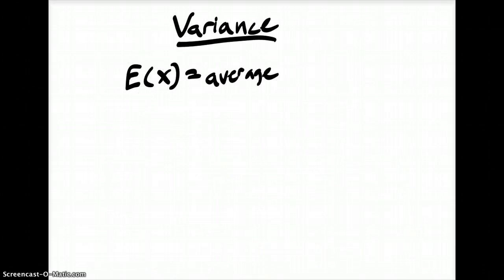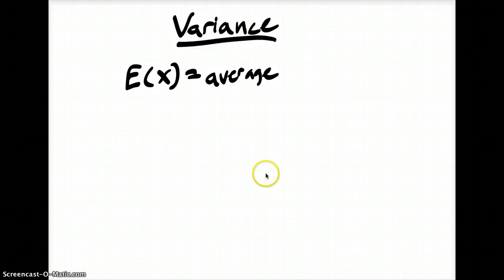So what is variance? Often times a distribution is classified by its expected value, which is the average value. For instance, when you roll a die, the expected value will be 3.5 because that's the average — if you roll thousands of dice and average the values, they all circle around 3.5. However, that doesn't tell us how loosely distributed the data is. The variance tells us how widely or not widely distributed that data actually is.